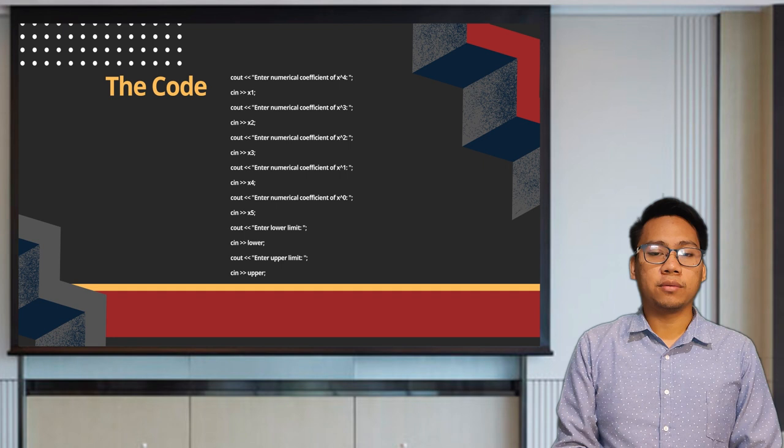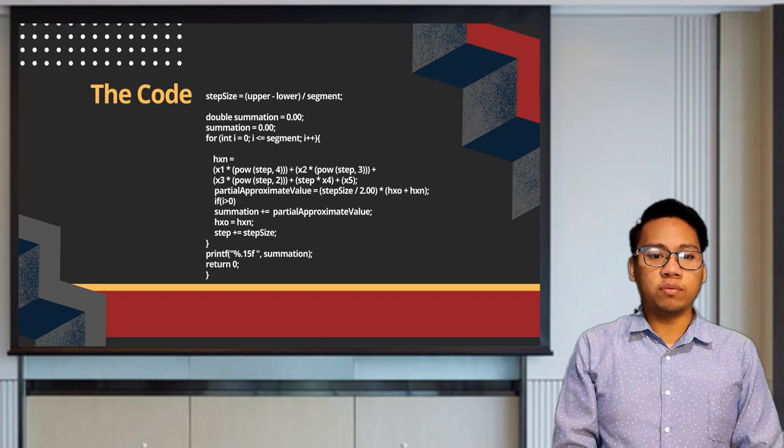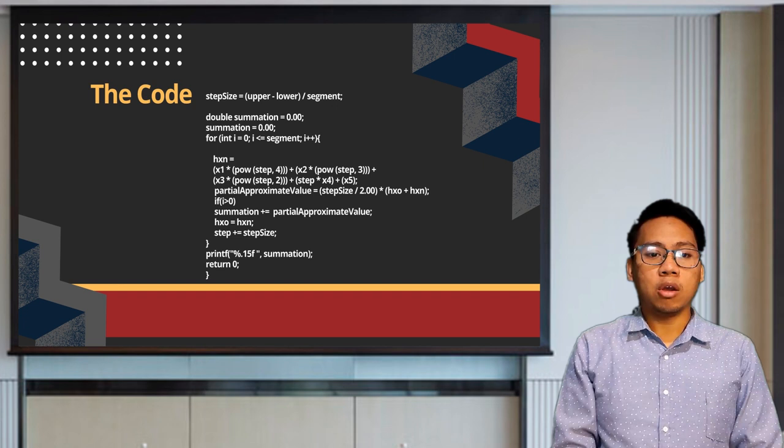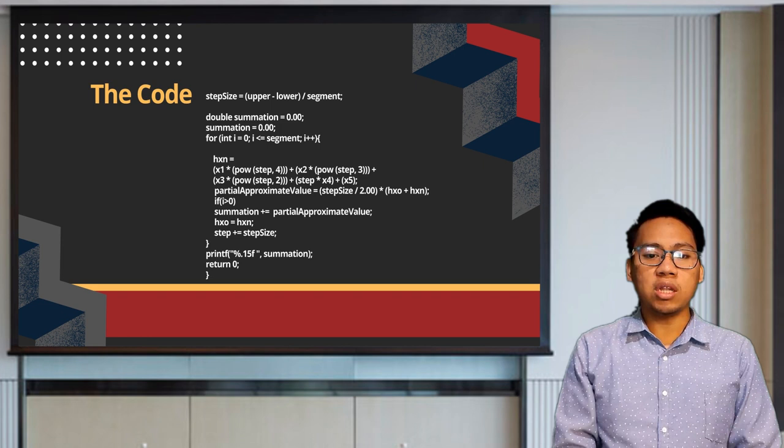In this code, the trapezoidal rule is performed. This involves the computation of h based on the upper limit, the lower limit of the integration, and the number of segments used. It will perform the computation of partial approximate values and sum them to generate the approximate value of the integration. The final answer is set to 15 decimal places.